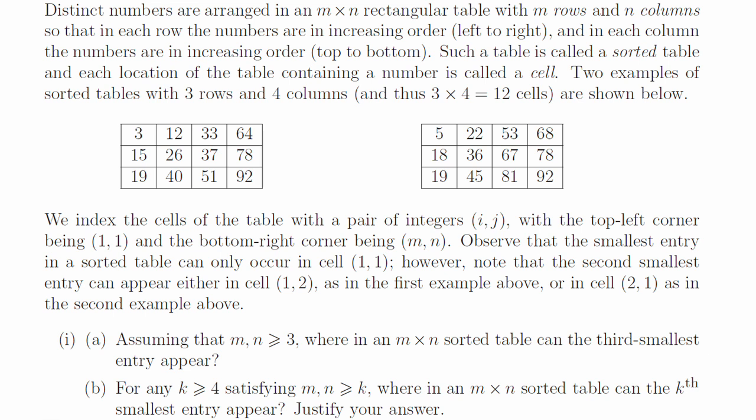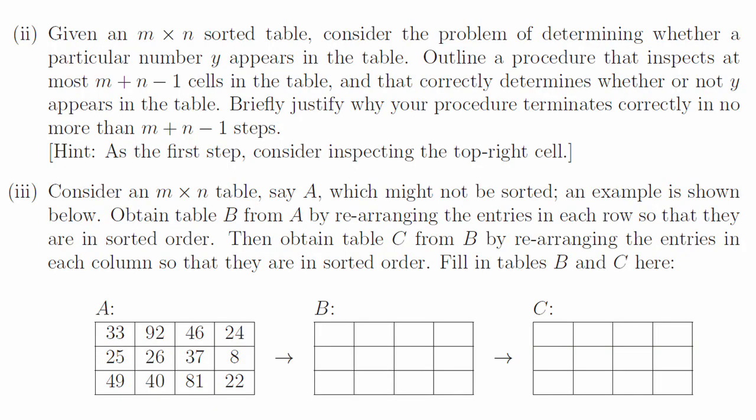Question 6. Part 1a. It could be in one of the cells 2-1, or 3-1, or 1-2, or 1-3. Part 1b. It could be any cell ij where the product ij is less than or equal to k. There are things in the top left corner that are definitely smaller than this item, and we could also have other things in the first row or the first column that are smaller. Part 2. Check the element in the top right corner. If it's equal to y, we're done. If it's bigger than y, then everything in the rightmost column can be eliminated. If it's smaller than y, then everything in the first row is smaller than y and can be eliminated. Repeat this process. After n plus n minus 1 inspections, we've either found y, or we've eliminated all of the rows and columns, in which case y is not in the table.